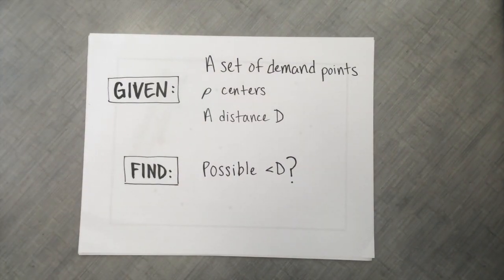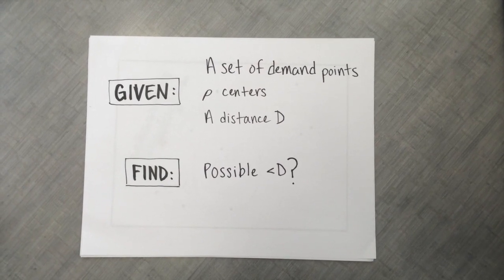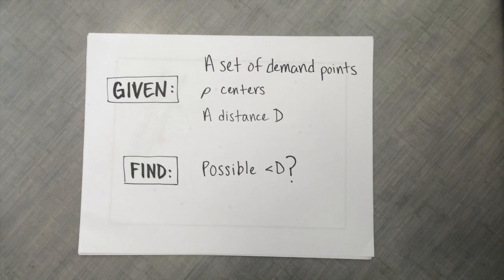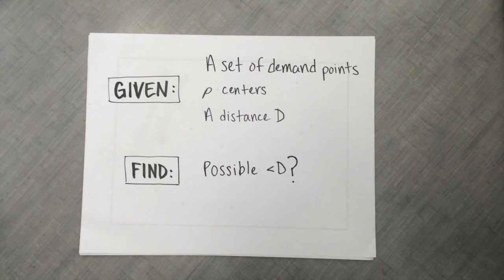The decision version of this problem is the following: Given a set of demand points, p centers, and a distance capital D, is there a placement of p centers such that the maximum distance from any demand point to its closest center is at most D?